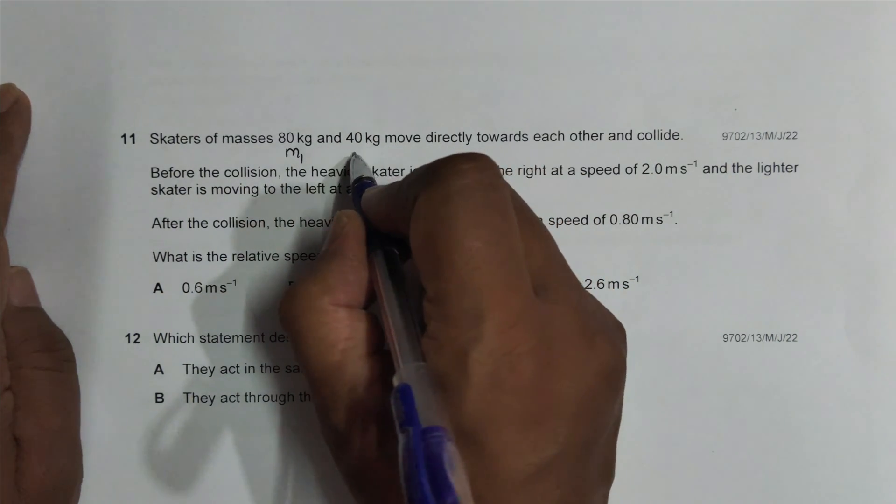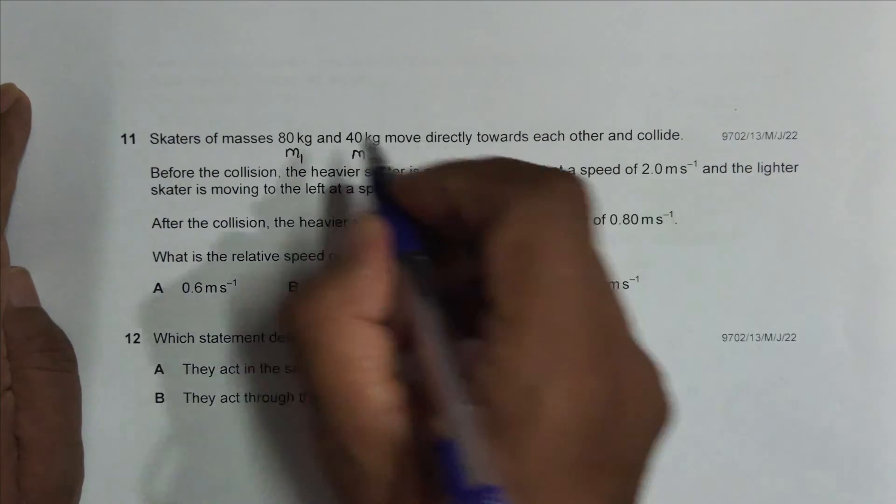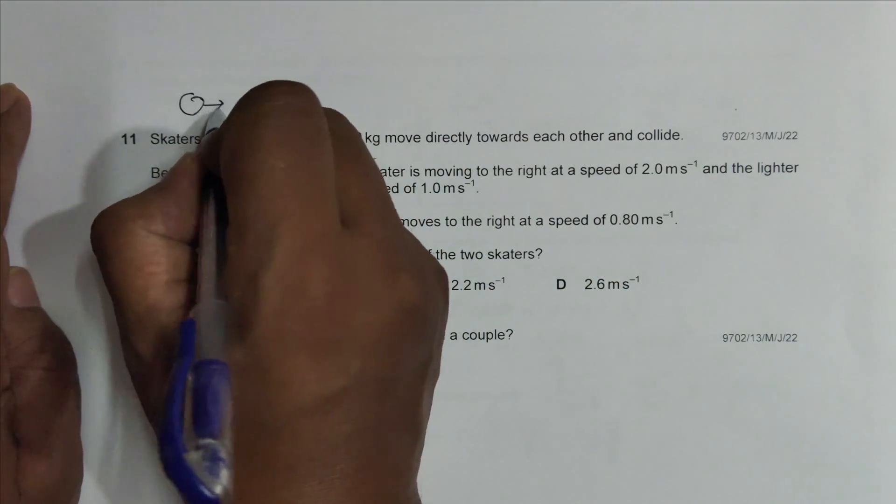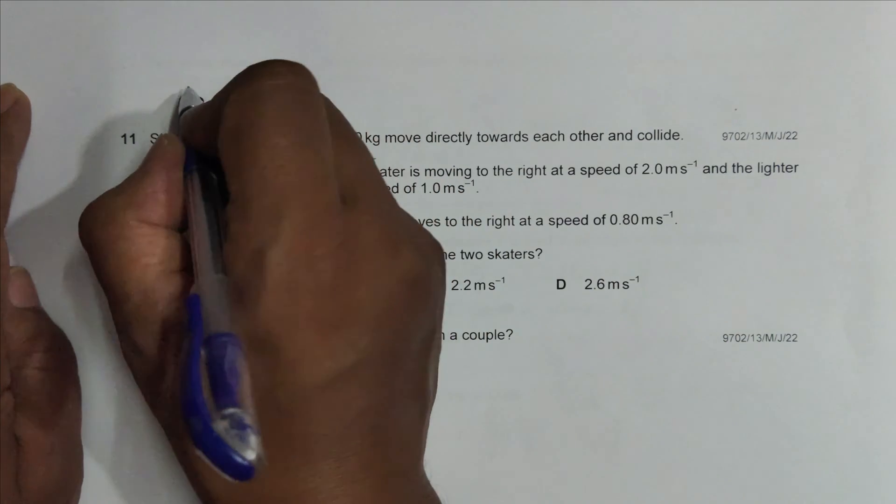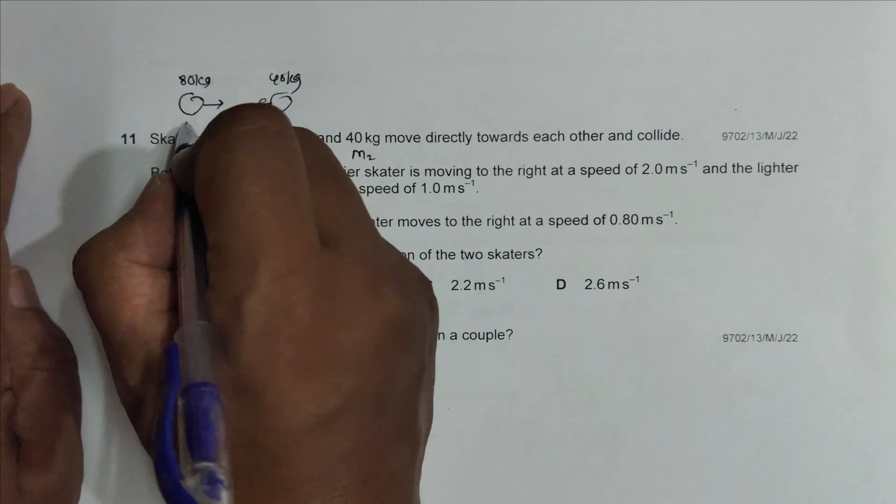and 40 kg, we name it as m2, move directly towards each other and collide. So they move towards each other and collide. So this is a 80 kg mass, this is a 40 kg mass or the person